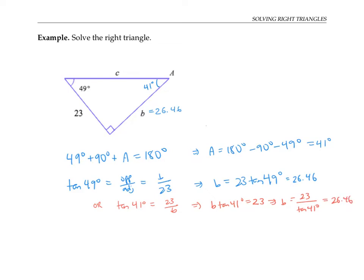The reason we want to use tan in this problem, and not sine or cosine, is because tan of 49 degrees relates the unknown side that we're looking for, B, to the side that we know the measure of. If we had used sine instead, we'd be saying that sine of 49 is B over C, and we'd have two unknowns, which would make it difficult to solve.